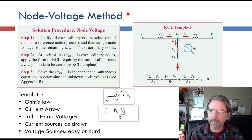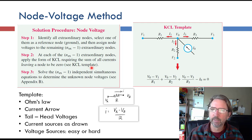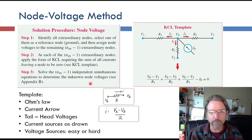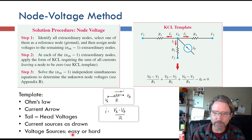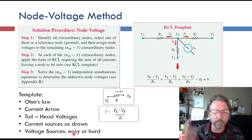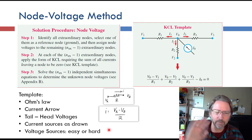That's the end of these node analysis examples. Remember the three steps: label unknown voltages; for each unknown voltage apply Kirchhoff's current law and Ohm's law to get a set of equations; solve for the node voltages; then do post-processing as needed. In the next video we'll look at voltage sources not connected to ground and the supernode concept. I'll catch you in the next video.